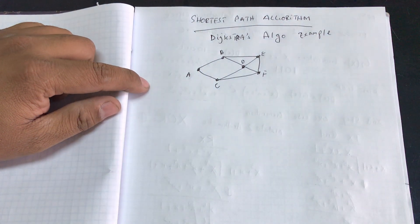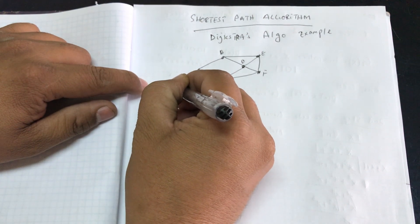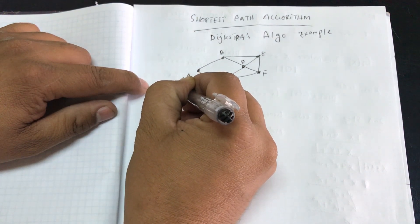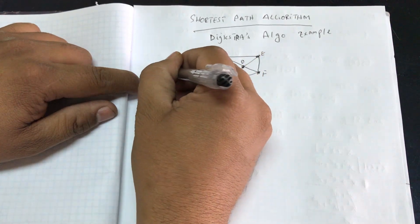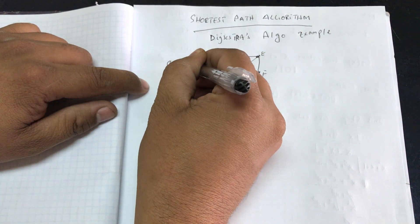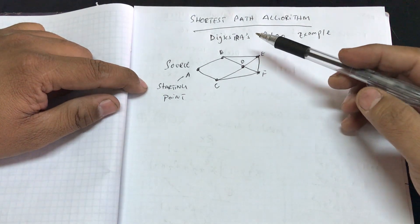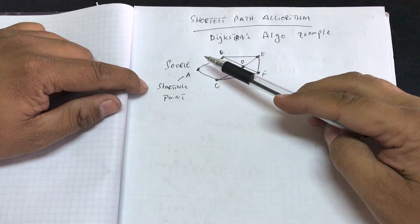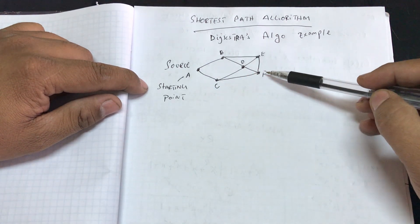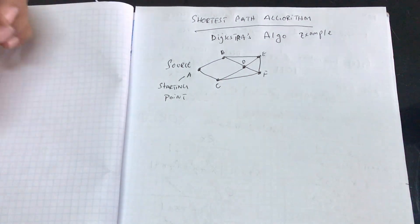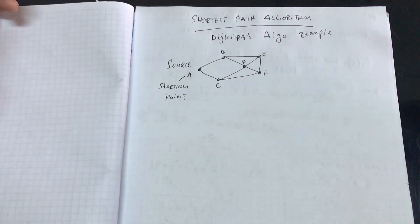This is my starting point — I can say this is my source. And we want to find out the shortest path between node A and all the way up to node F, or to E, to B, to D, to C — whatever it is.